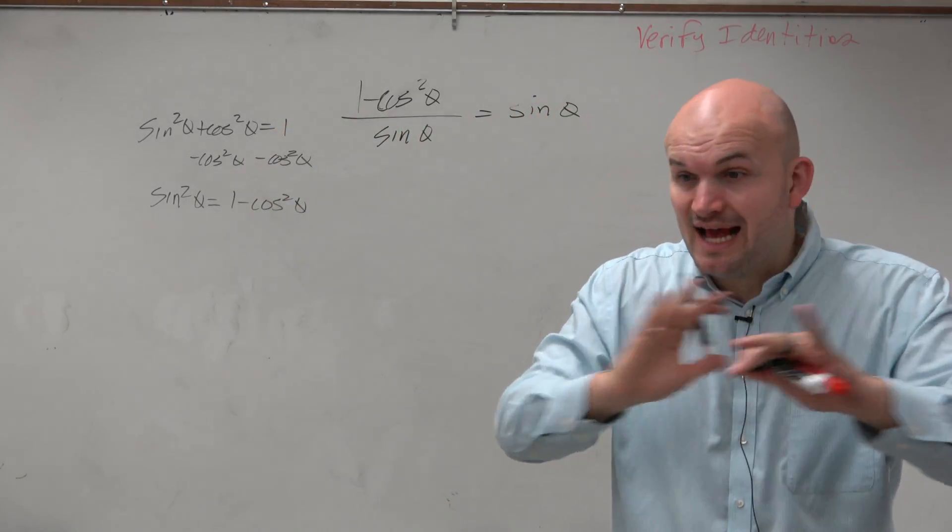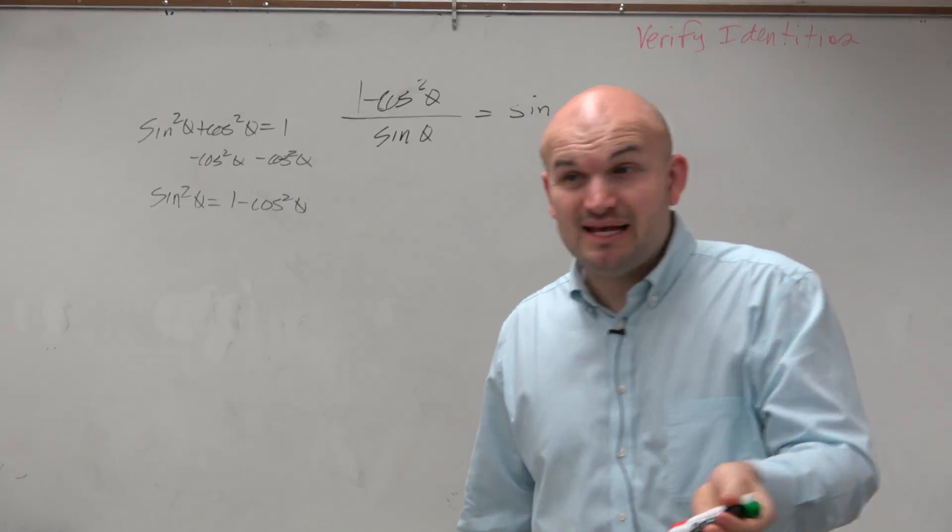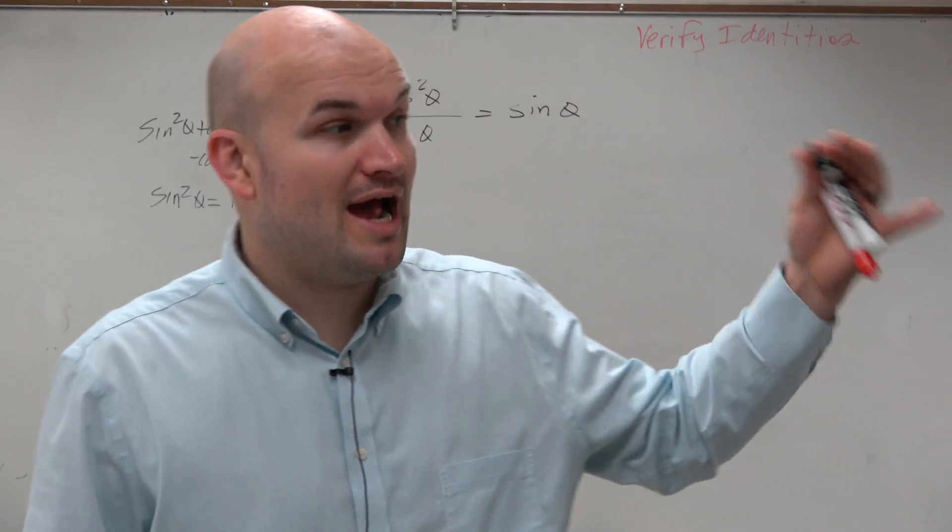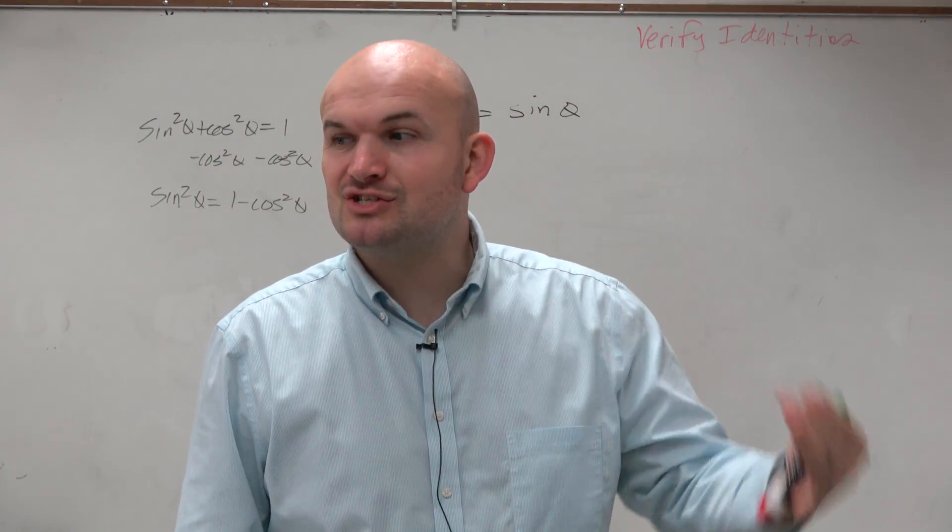So immediately, once I see any term that has cosine, that has a squared, I automatically think Pythagorean identity. That doesn't mean every single time you have something squared, you have to use the identities, or that's the best way. But that's usually where I like to start.